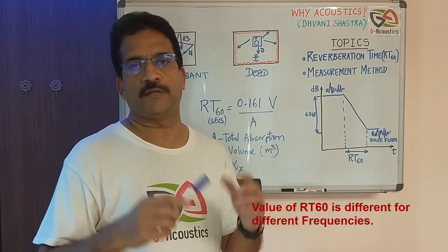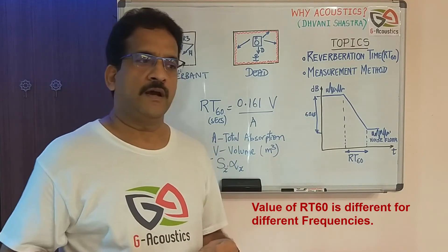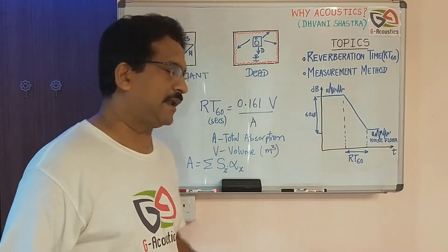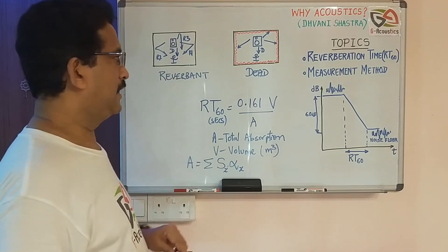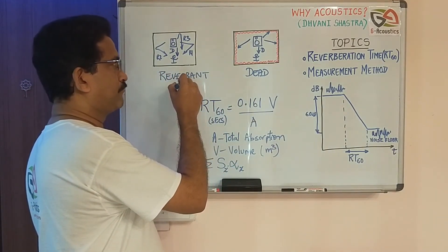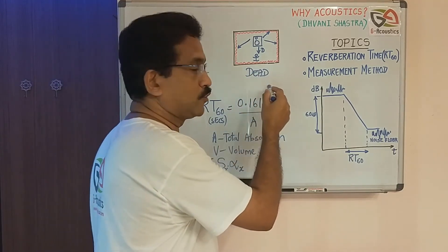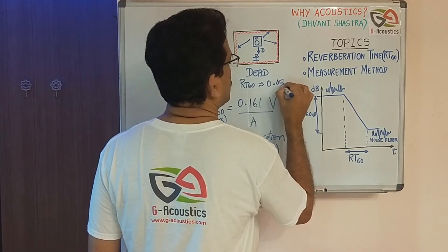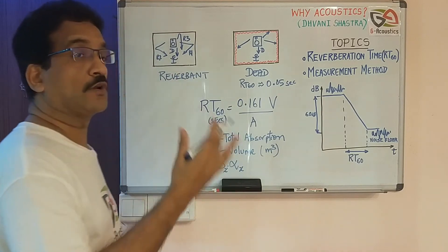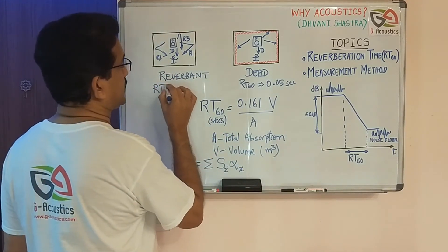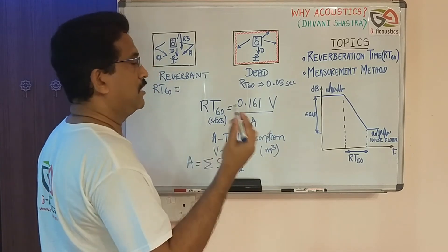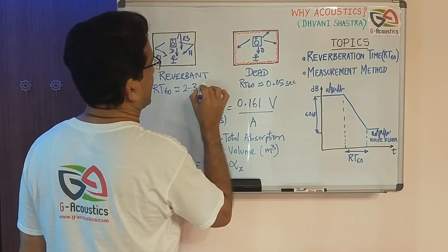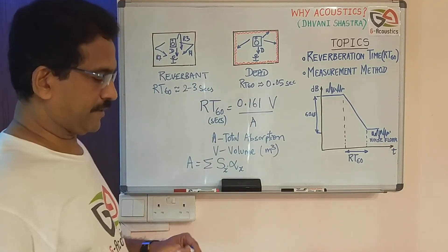This reverberation time is dependent on frequency, meaning the RT60 values are different for different frequencies. In a dead room, the RT60 value might be 0.1 or 0.05 seconds, meaning it's totally absorbed. In a reverberant room, it may be 2 to 3 seconds depending on the room size. These are two extremes.